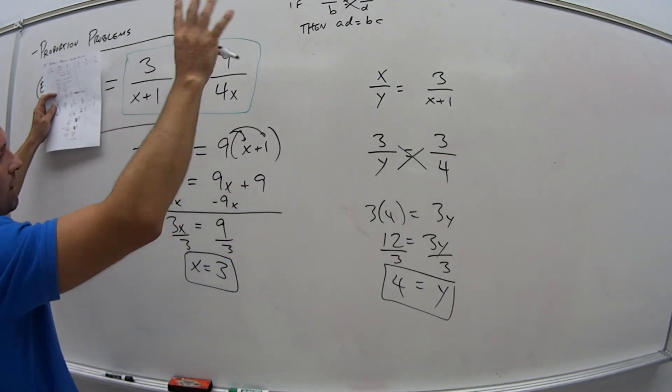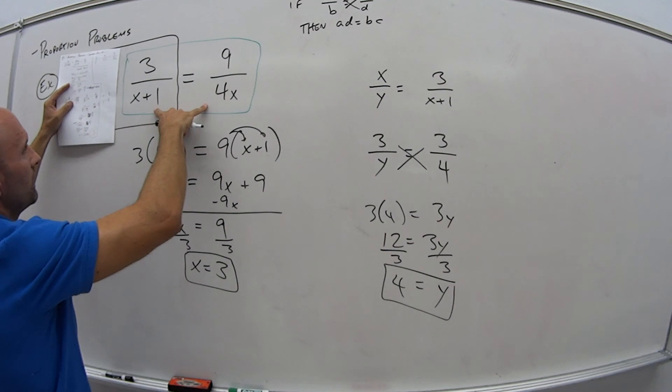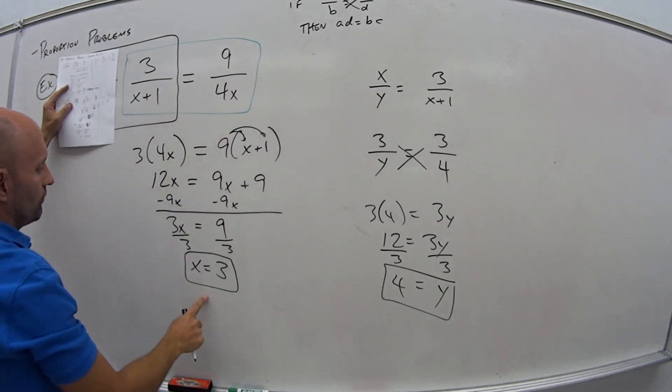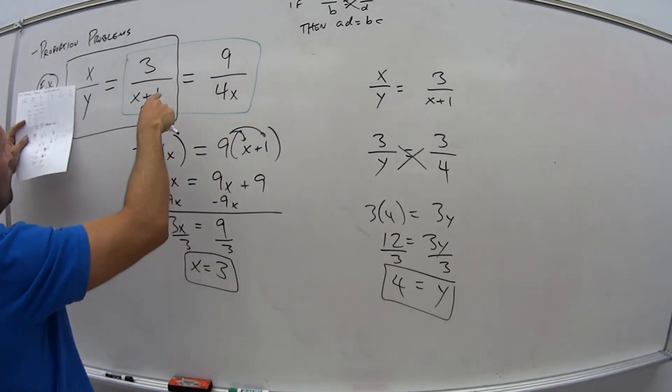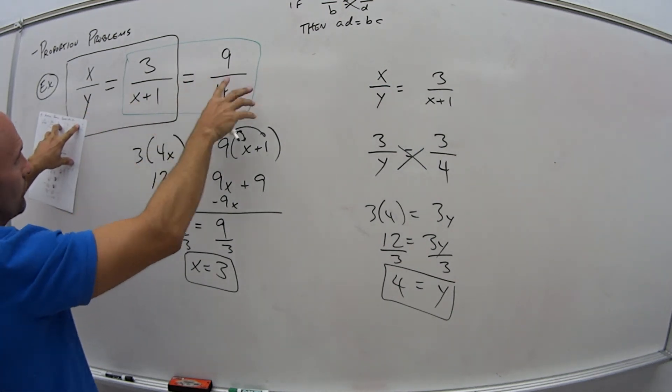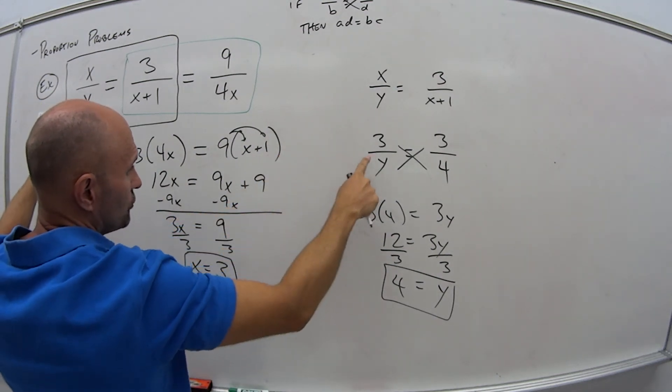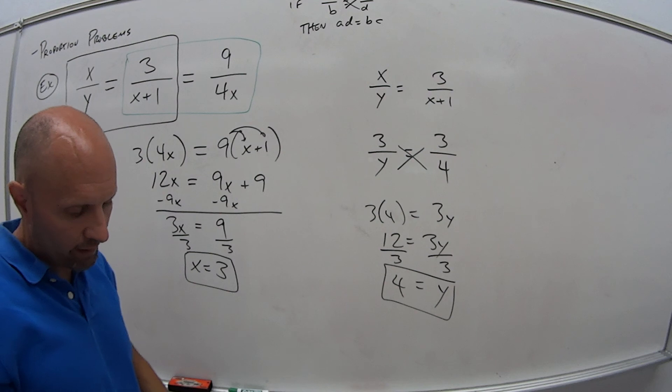So if we have this problem, you should be jumping out of your seat like, alright, I know how to do these, these are easy. Pick the two that have the same variable, solve it. Use the other one, the third one, with either of these two, it doesn't matter. Set up the equation, substitute in what you know, and then cross multiply and solve again.